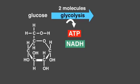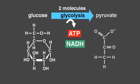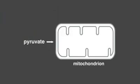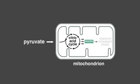In eukaryotes, the breakdown product pyruvate is imported into mitochondria, where it ultimately feeds into the citric acid cycle and the electron transport chain.